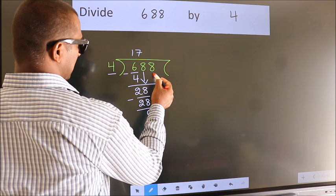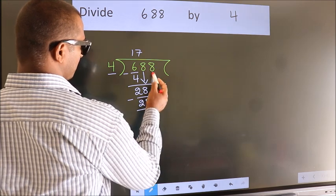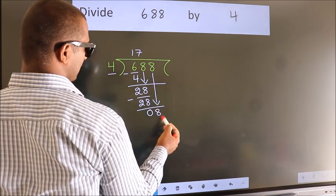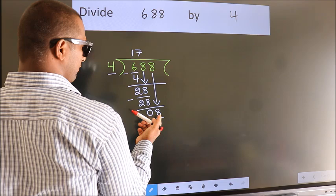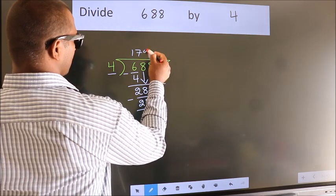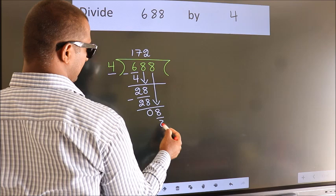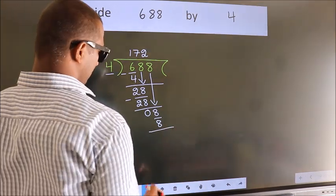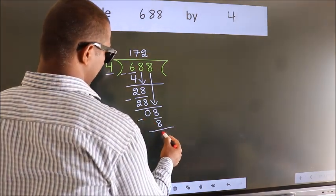After this, bring down the beside number. So, 8 down. So, 8. When do we get 8? In 4 table. 4 2s, 8. Now, we subtract. We get 0.